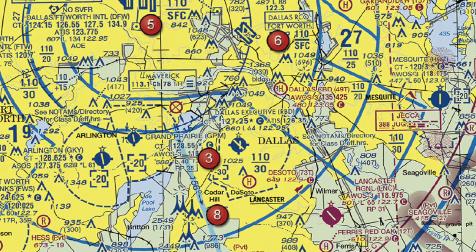Refer to figure 25 area 3. The floor of Class B airspace at Dallas Executive RBD — what is it? We find Dallas Executive RBD; the runway sits in Class D airspace. But the question asks about the Class B bravo airspace above it. Class B airspace altitudes are given in MSL and displayed as fractions — the top number is the ceiling, the bottom number is the floor. In the Class B sector covering Dallas Executive, we see 110 over 30, meaning the floor of that Class B airspace is 3,000 feet MSL.